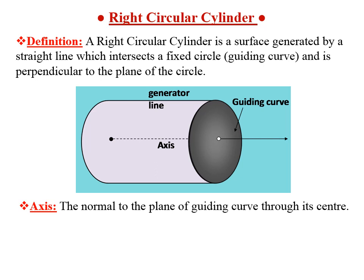Now, what is the axis of the cylinder? It is the normal to the plane of the guiding curve through its center, as you can see from the figure. The radius is simply the radius of the guiding curve, which is a circle. In our day-to-day life, we see many real-life examples of the right circular cylinder — such as a gas cylinder or a PVC pipe, and many more.